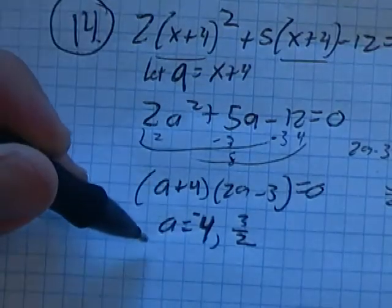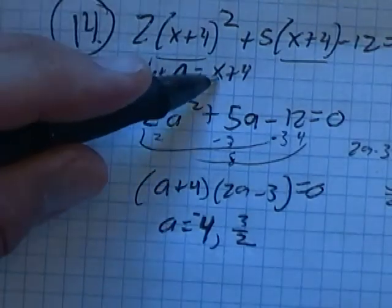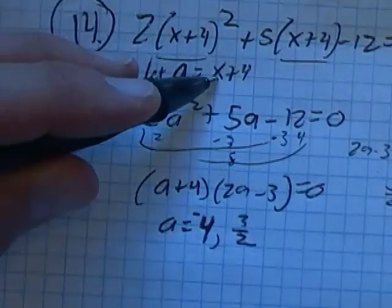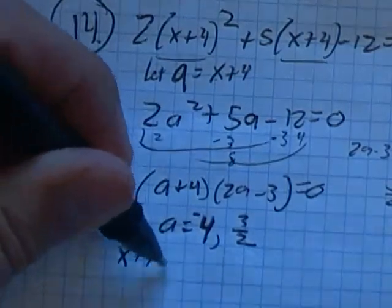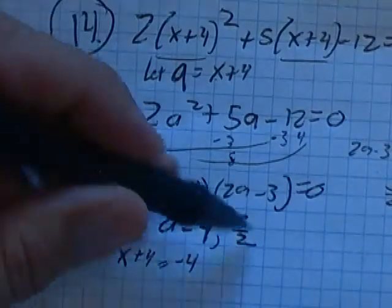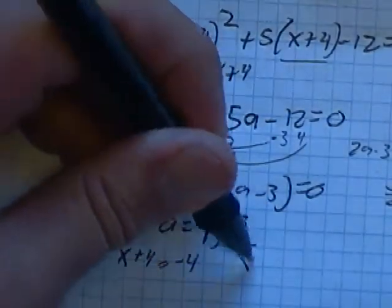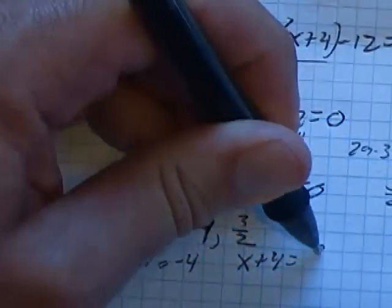So now that's what a is, but I don't want to know what a is, I want to know what x is. So a is just the same as x plus four. If a equals negative four, that means x plus four must equal negative four. And if a equals three halves, that means x plus four must equal three halves.